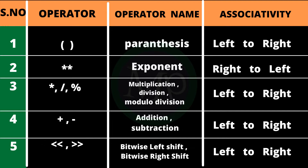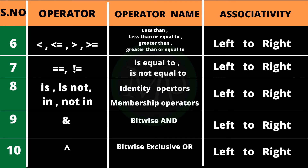The next highest priority operators are addition and subtraction — these have the same priority and are evaluated left to right. After that come the bitwise left-shift and bitwise right-shift operators, also left to right. Then come the comparison operators: less than, less than or equal to, greater than, and greater than or equal to — also left to right.